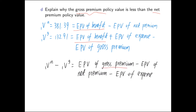If we take the difference of the net premium policy value and the gross premium policy value, we get the expected present value of gross premium subtract the expected present value of net premium, subtract the expected present value of expenses. The gross premium is bigger than the net premium because the gross premium also balances out the expected present value of expenses at time zero, including initial expenses. However, the expected present value of expenses at time one does not contain initial expenses, making the difference positive, confirming that the net premium policy value is greater.